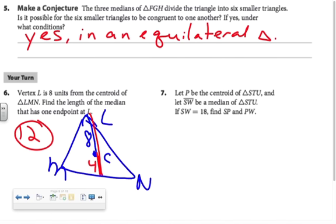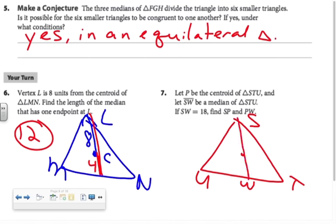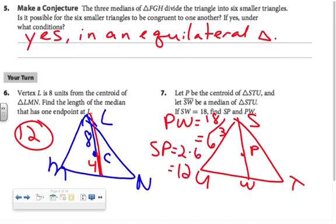In number seven, it says let P be the centroid of the triangle and SW be a median. If SW is 18, find SP and PW. Sketching it might be helpful. This is triangle STU, and P is the centroid, and SW is the median. I know that SW is 18. If I divide my median by three, I will find the short part of my median, which is PW. So PW is 18 divided by three, which is six. SP is the long part of the median. It's twice as long as the short part, so it's two times six, which is 12.